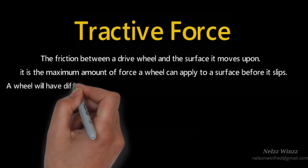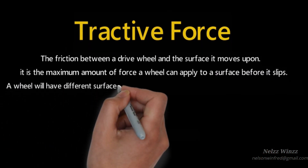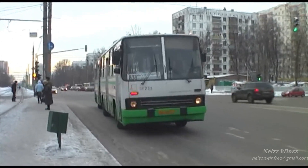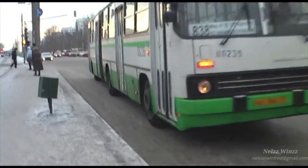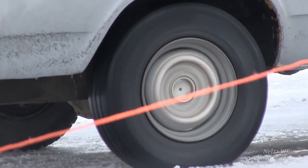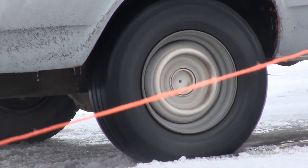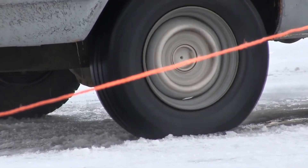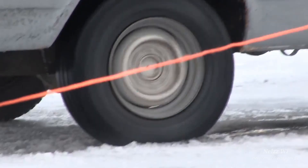A wheel will have different surfaces, as the coefficient of friction is based on pairs of surfaces. When a torque is applied to a wheel, it applies a force along the ground. However, anyone can imagine that if the wheel was spinning on ice, the wheel would slip and would not move forward. The tractive force is equal to the frictional force between a wheel and the ground.